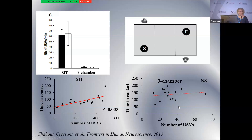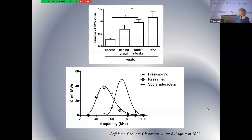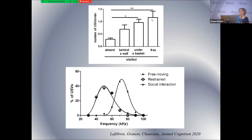With my colleague Frédéric Chauveau and student Eleonore Lefebvre, we did an experiment during restraint stress in male mice. The restrained animal was either alone, or presented with a visitor — a non-familiar conspecific — either behind a wall, under a basket, or freely moving. We can see that call rate increases when a conspecific is present and when that conspecific was moving around, although the call rate remains very small.